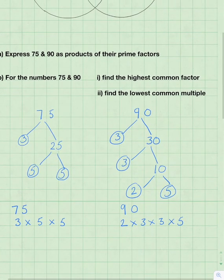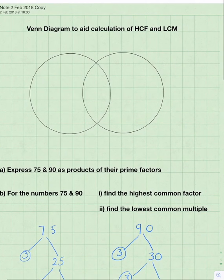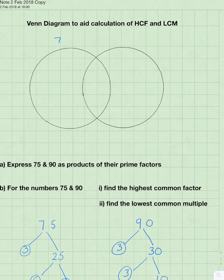Now, if we write these factors up here on our Venn diagram. So we write 75 is going to be in the first circle and 90 is in the second circle.